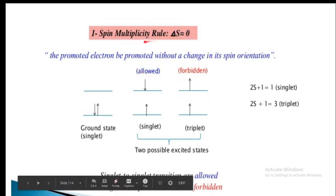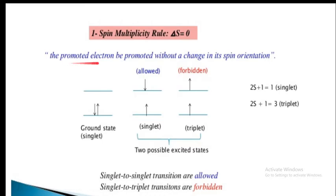The spin multiplicity rule is delta S equals zero. In other words, the promoted electron is promoted without a change in its spin orientation. Spin conservation is very important. In the ground electronic state, the two electrons are paired as down arrow and up arrow.